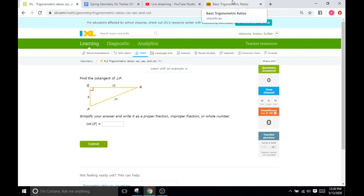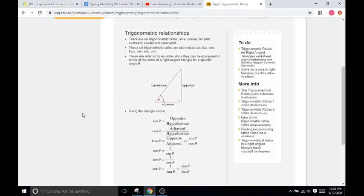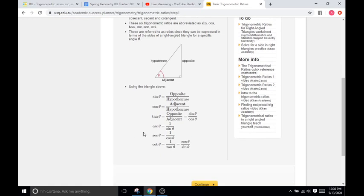Just like with the last video with sine, cosine, and tangent, I brought up a diagram that explains what exactly you do for these ratios. The only thing you really need to know is that the three ratios we are doing today—secant, cosecant, and cotangent—are directly related to sine, cosine, and tangent.